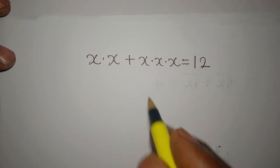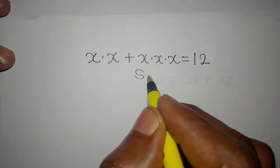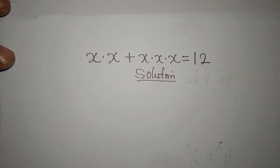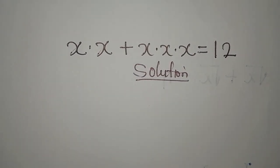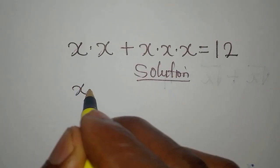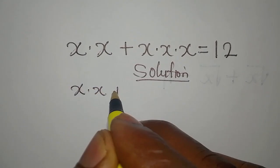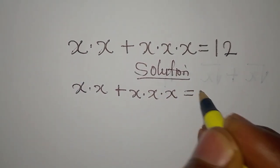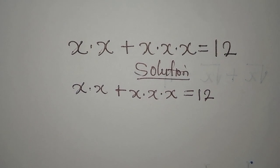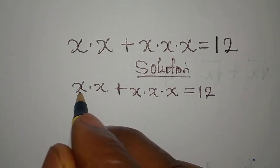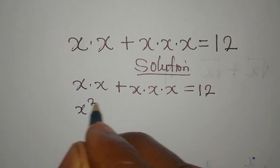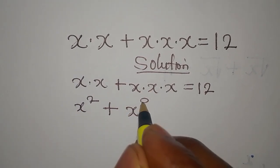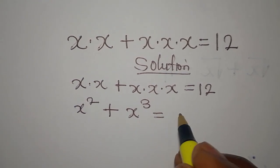Let's provide the solution to this problem. The equation is x multiplied by x, plus x multiplied by x multiplied by x, equals 12. x times x is x squared, and x multiplied by x multiplied by x is x to the power of 3. So we have x squared plus x cubed equals 12.